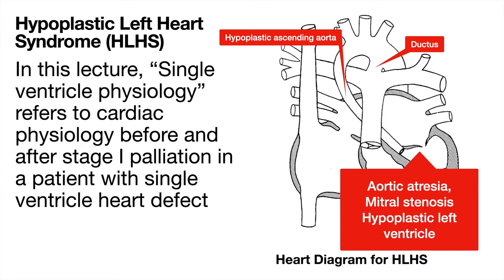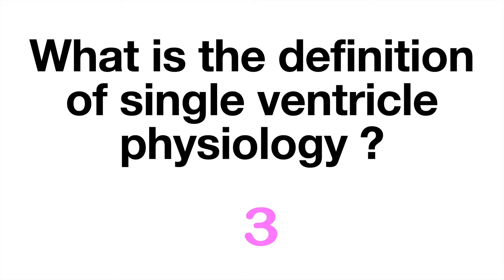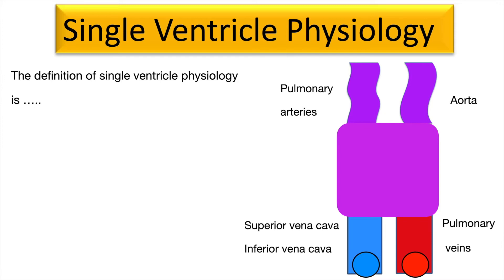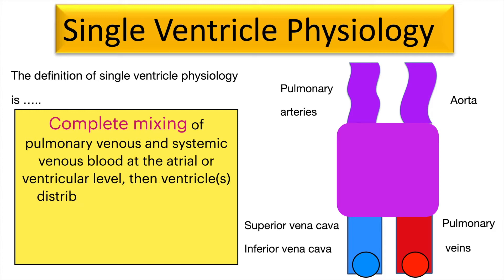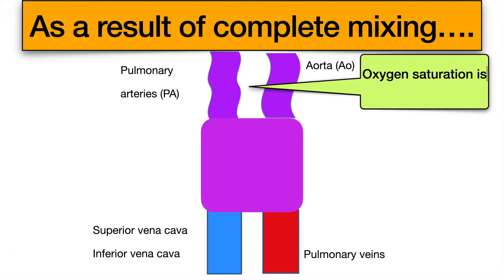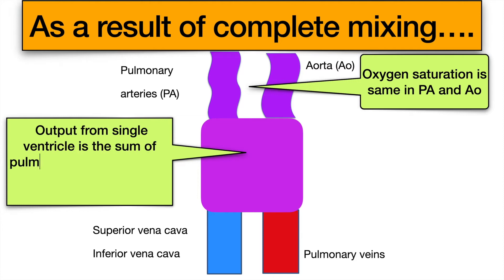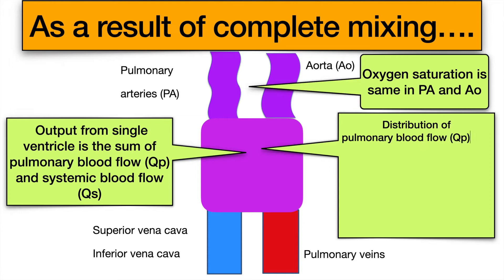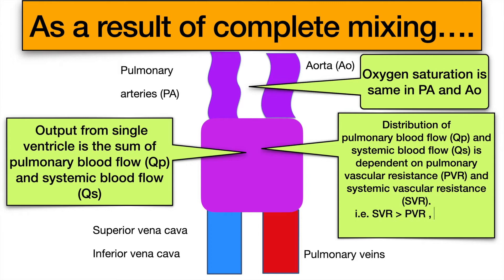The definition of single ventricle physiology is: complete mixing of pulmonary venous and systemic venous blood at the atrial or ventricular level, then the ventricle distributes output to both the systemic and pulmonary beds — parallel systemic and pulmonary circulation. As a result of complete mixing, oxygen saturation in the aorta and pulmonary artery is the same. Because SVR is higher than PVR, QS is smaller than QP.